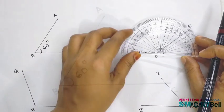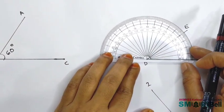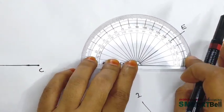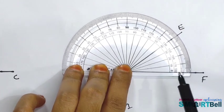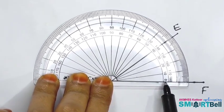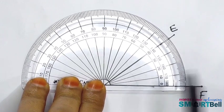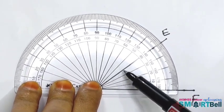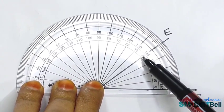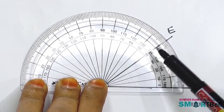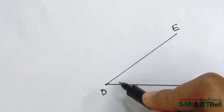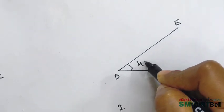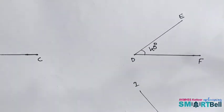The next one. Place the center point of the protractor here. Then, simply focus on zero. Then, check the other line passes through which number. Yes, the number 40. So, the angle is 40 degrees.